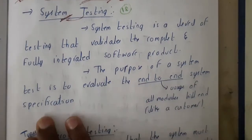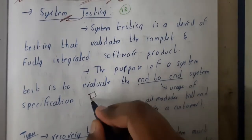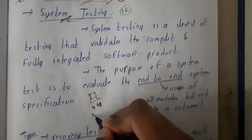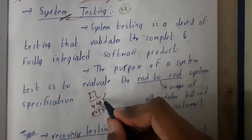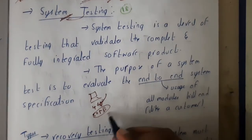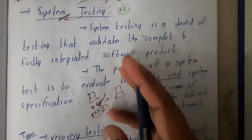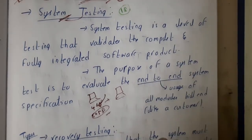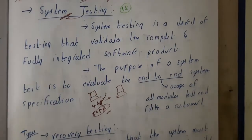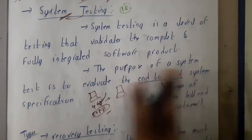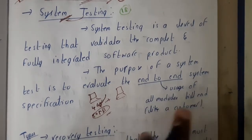The purpose of system testing is to evaluate the end-to-end system specifications. For example, assume you have designed a software that works with a minimum of 4 GB RAM and requires around 50 MB of disk space. If the user has less than that, there could be issues. You need to check all those issues — how the user will interact with the system, will they face lag or other issues. End-to-end means usage of all modules till the end, as experienced by a customer.